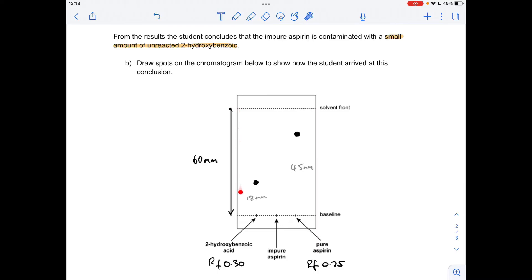Obviously if your distance isn't 60, you still do the same thing: RF multiplied by the distance. Moving on to the impure aspirin, draw a spot at 45 millimeters. Then since it contains a small amount of unreacted 2-hydroxybenzoic acid, we draw a faint spot at 18 millimeters. The pure substance shows a strong spot. A small amount would be a weak or faint spot.